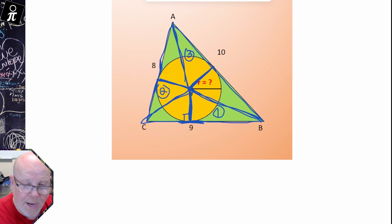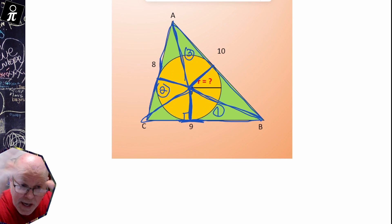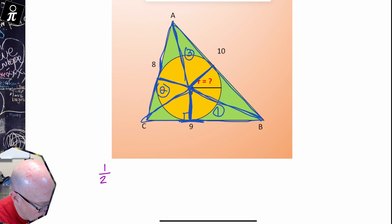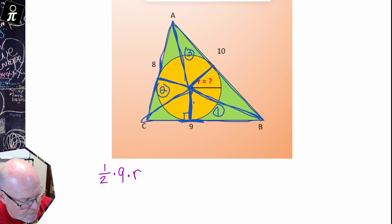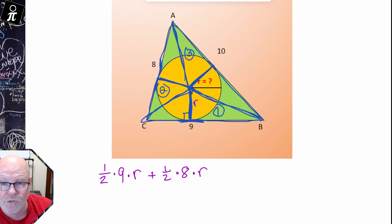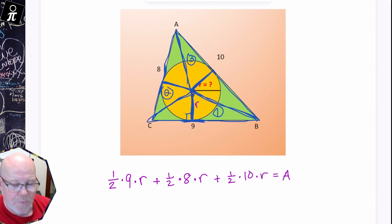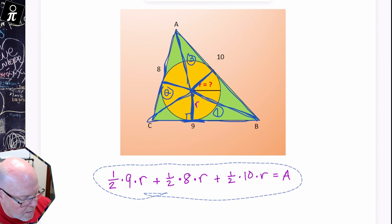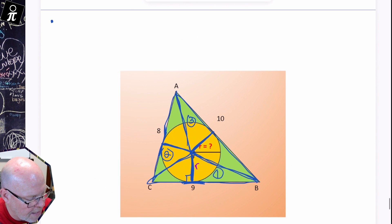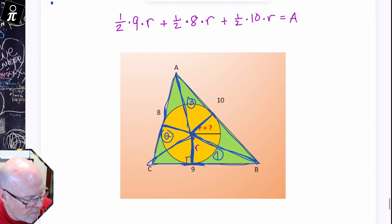We can use one-half base times height on each of those three triangles to find the area of the entire shape. Triangle one: one-half times nine times R. Triangle two: one-half times eight times R. Triangle three: one-half times ten times R. That whole sum equals the area of the triangle. We now have the formula for the triangle in terms of R.